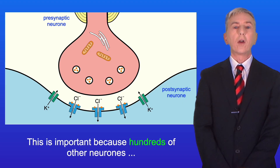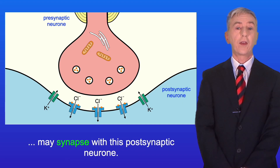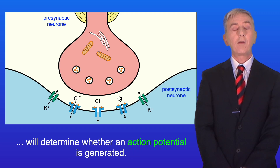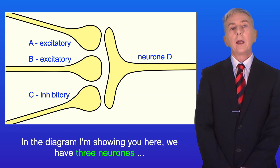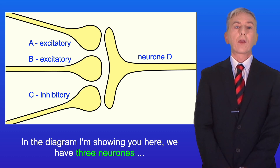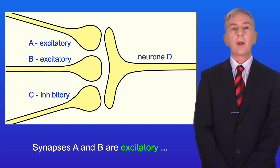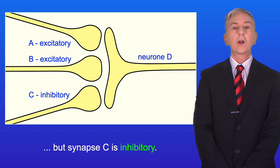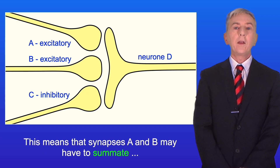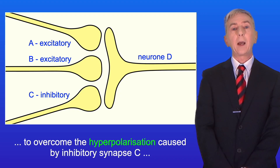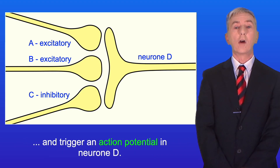This is important because hundreds of other neurons may synapse with this post-synaptic neuron, and the balance between excitatory and inhibitory synapses will determine whether an action potential is generated. In the diagram shown here, three neurons form synapses onto one neuron: synapses A and B are excitatory, but synapse C is inhibitory. This means that synapses A and B may have to summate to overcome the hyperpolarization caused by inhibitory synapse C and trigger an action potential in neuron D.